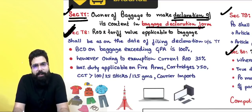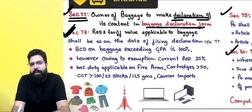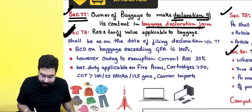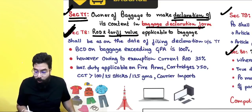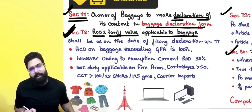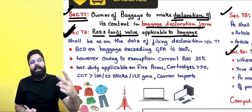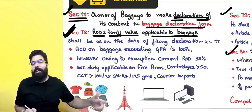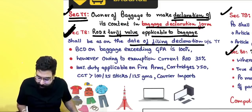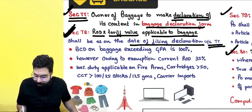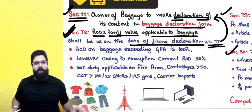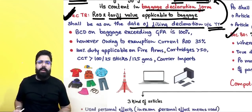Section 78 states that the day you submit the Baggage Declaration Form to customs authorities at the international airport, that date's rate of duty and tariff value will be applicable to the baggage. So the rate of duty and tariff value applicable to baggage shall be as of the date of filing the declaration under Section 77.